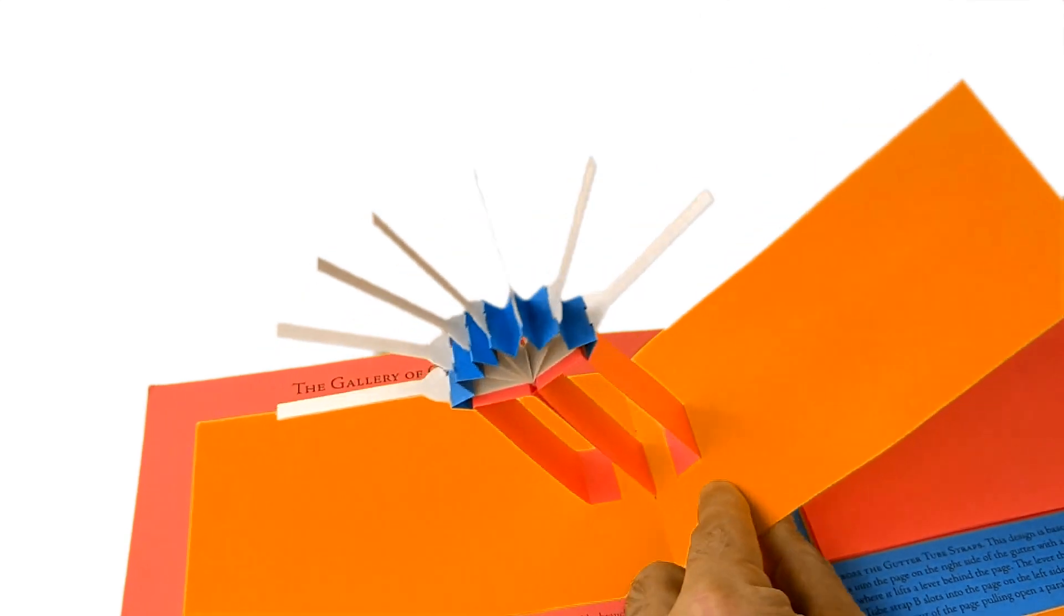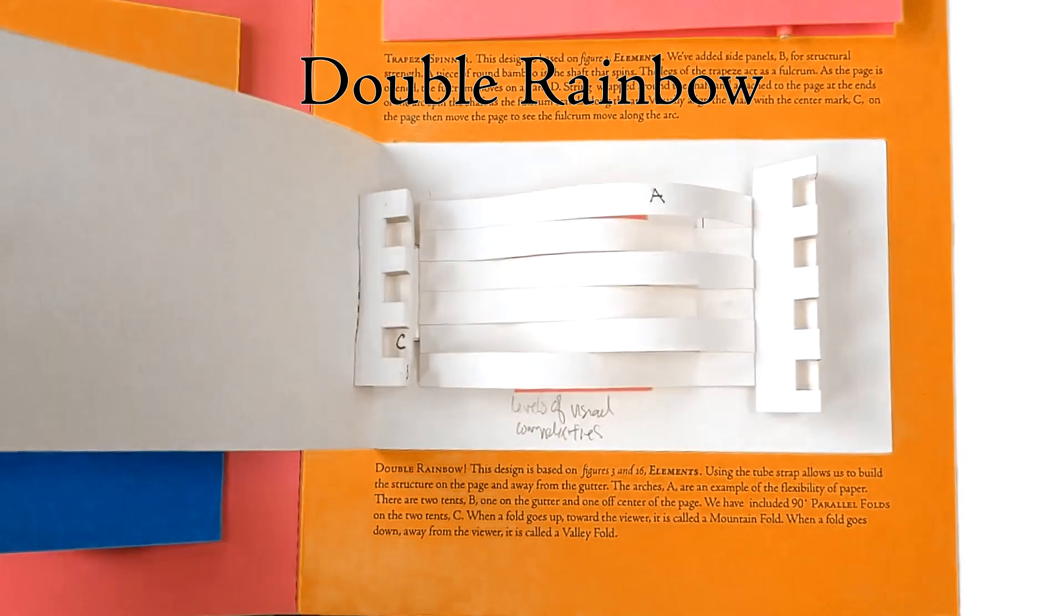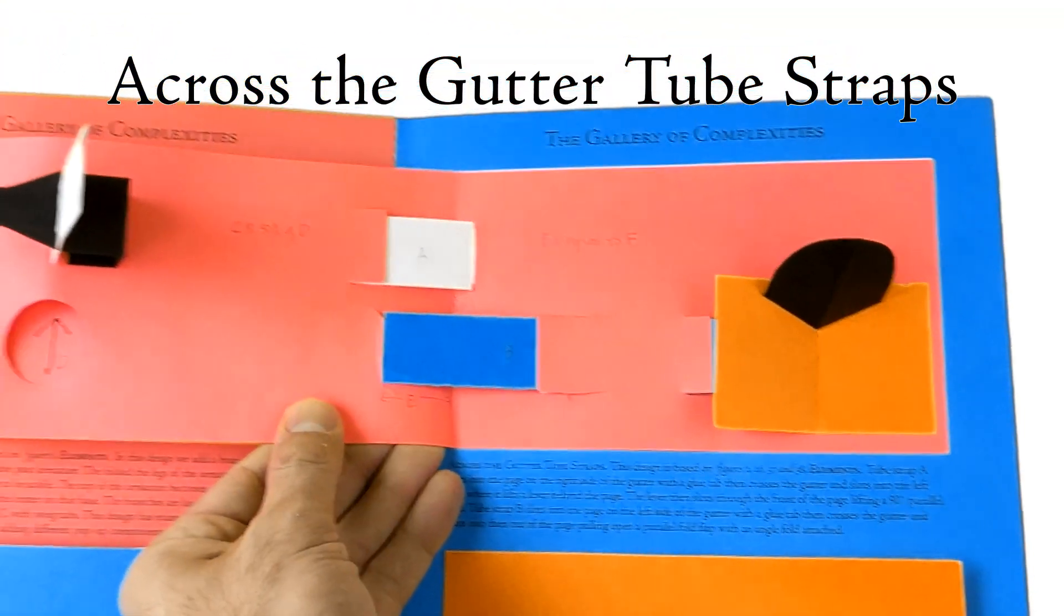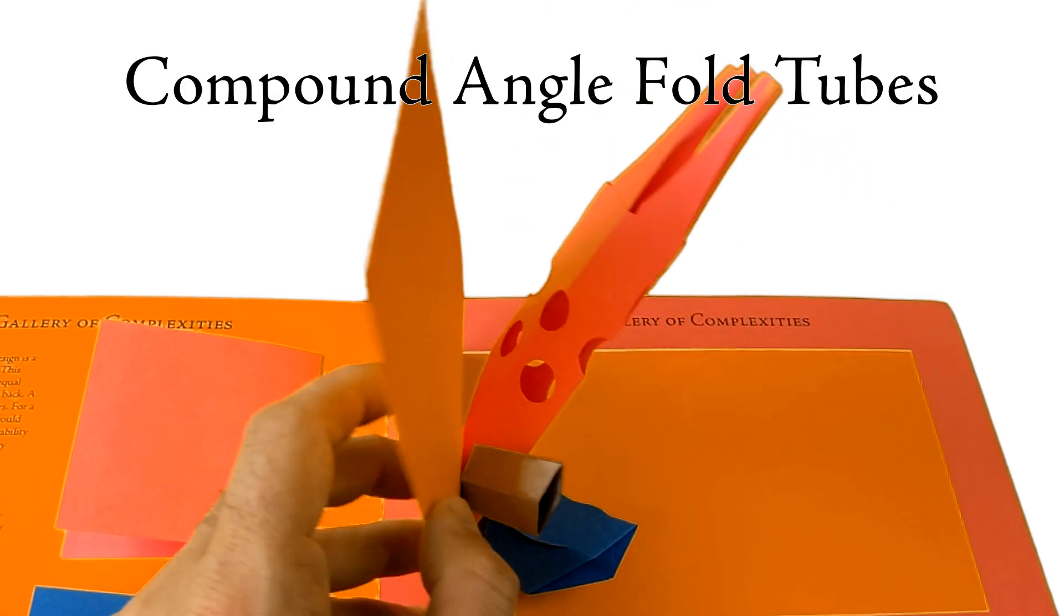Some of the new pop-ups in Complexities include interwoven coils, double rainbow, across-the-gutter tube straps, infinity loop, space piston, floating rings, compound angle fold tubes, and more.